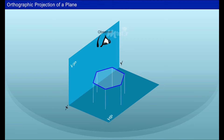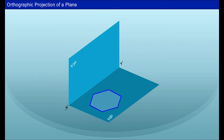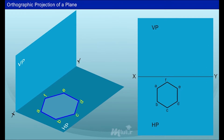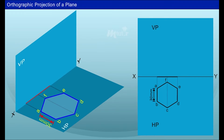The first step is to obtain the true shape of the hexagon in its simple position. Since it is given that one of its edges rests on the HP — that is, initially the plane lies on the HP — the top view gives the true shape. It is also given that one of the edges rests on HP and its surface is perpendicular to VP. The hexagon can be drawn with side 30 mm. The front view is then obtained by drawing projector lines from the hexagon. Since the points A, F, and E are not visible, they are given within brackets.